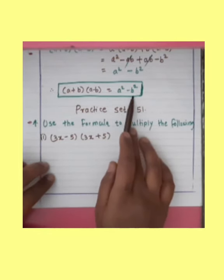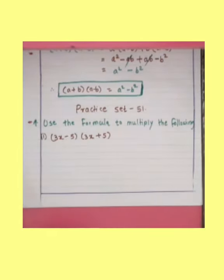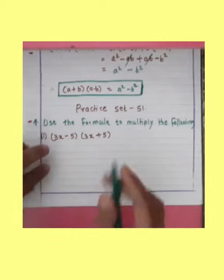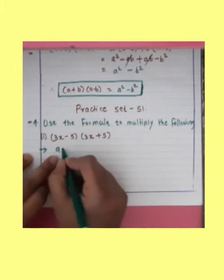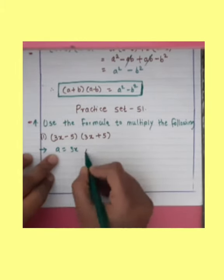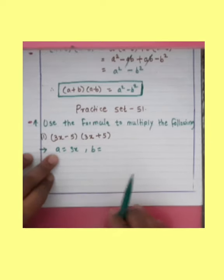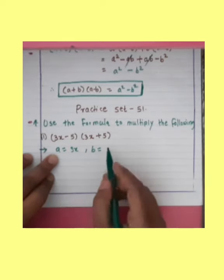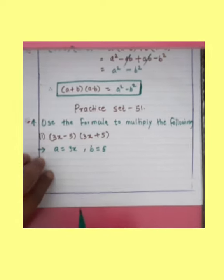So we apply the formula: A square minus B square. A is equal to thrice X, and B is equal to 5.